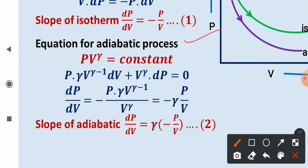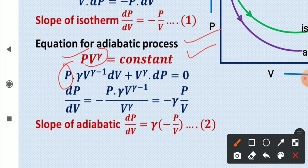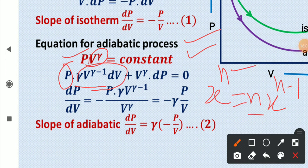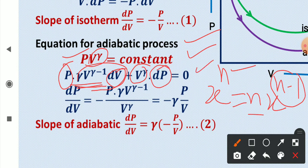For the adiabatic process, the equation is PV^γ = constant. Differentiating both sides: P·γV^(γ−1)·dV + V^γ·dP = 0. Using the power rule, differentiating V^γ gives γV^(γ−1)·dV. Adding the second term V^γ·dP and setting equal to zero gives the derivative of the constant.